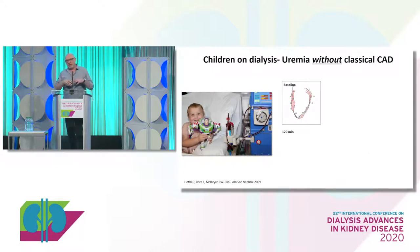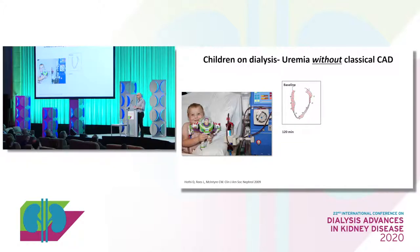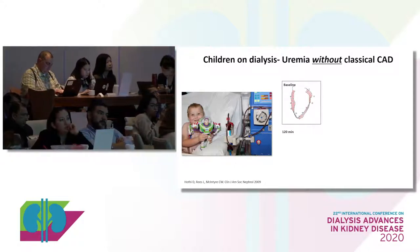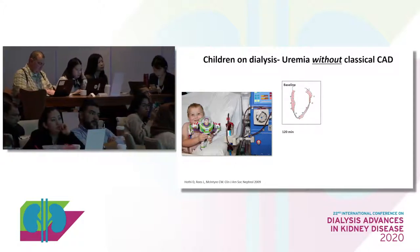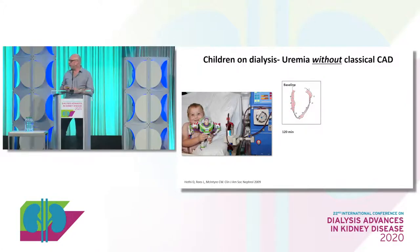Now, it's ischemia, but it's not about large vessel disease. We started to focus on that when we went to a model of dialysis that excluded large vessel disease, diabetes, and smoking. That, unfortunately, was children. In a study of 12 children at Great Ormond Street, we were able to demonstrate that all of the kids suffered recurrent myocardial injury.